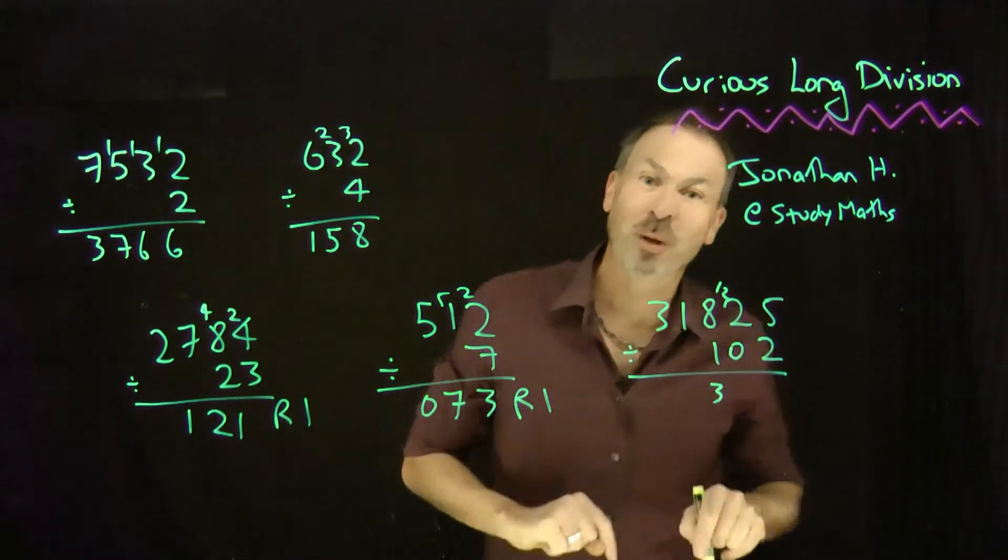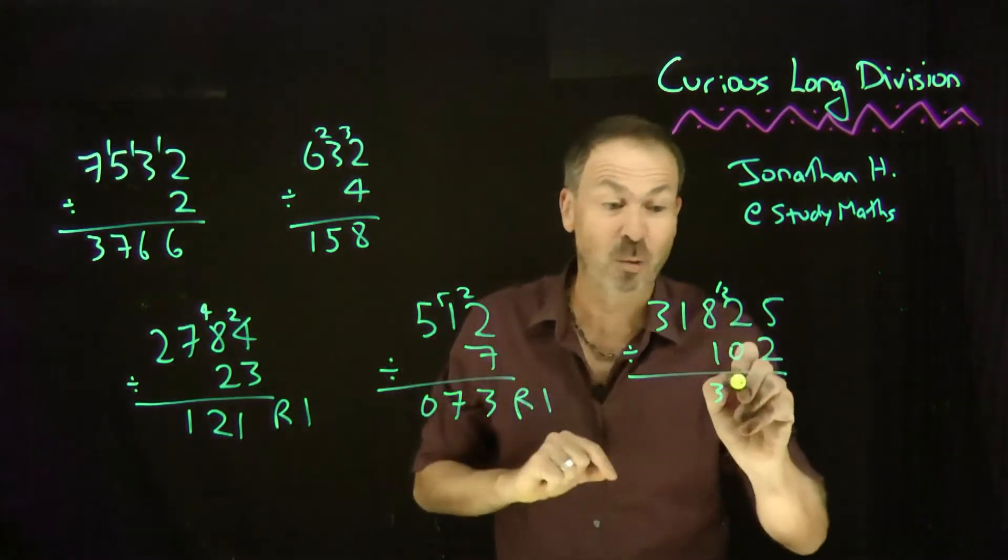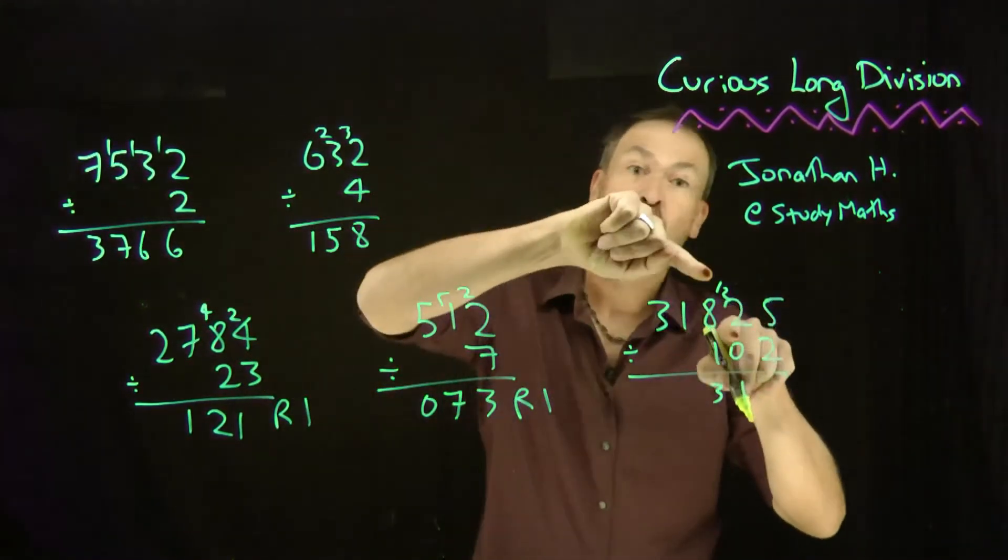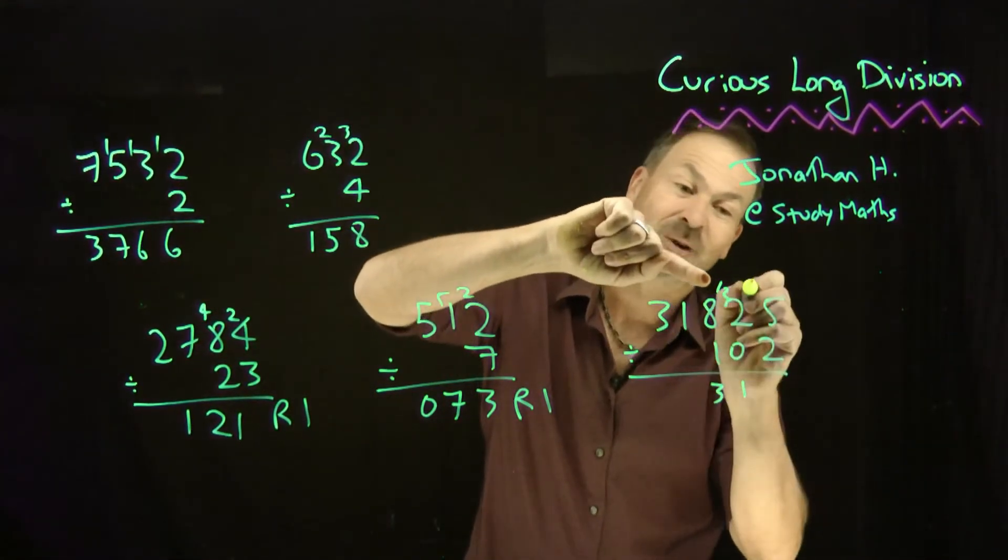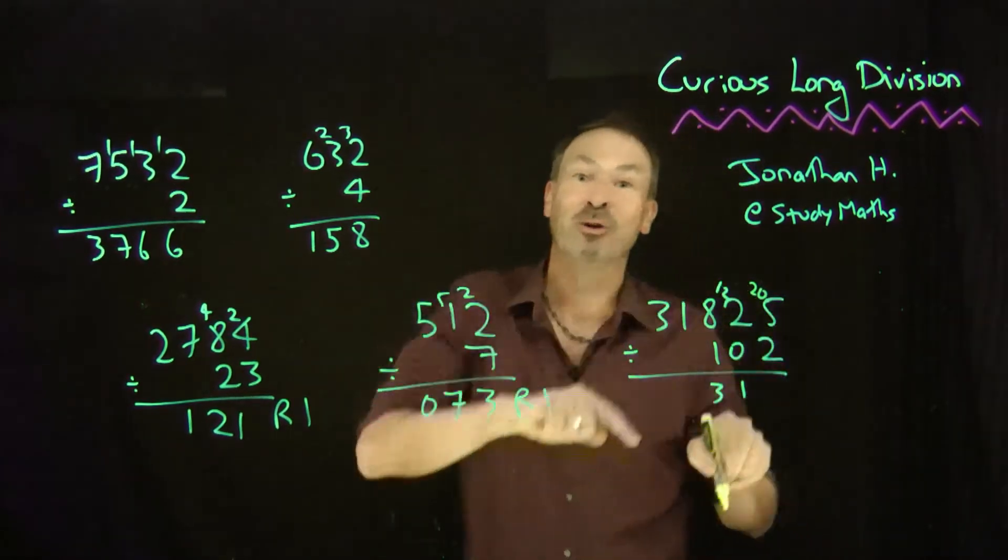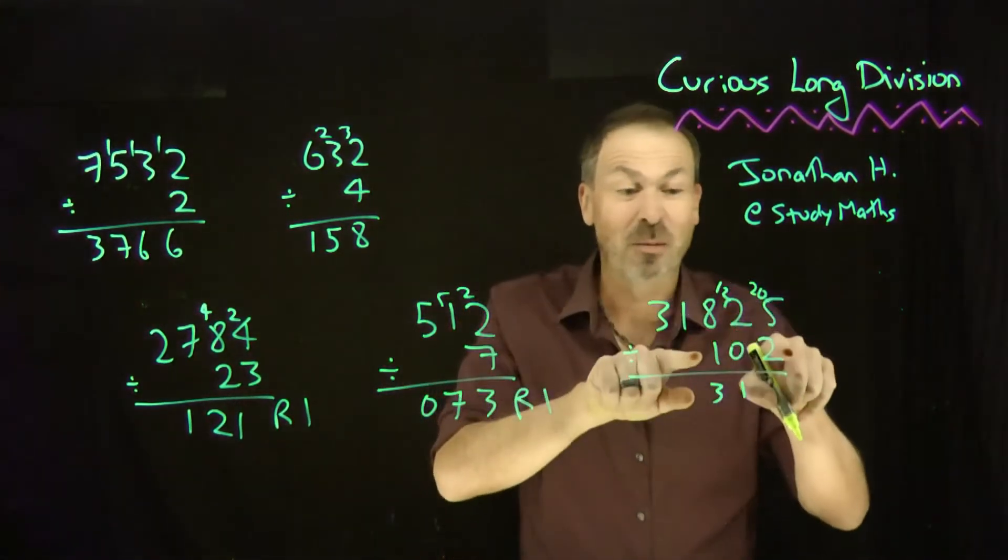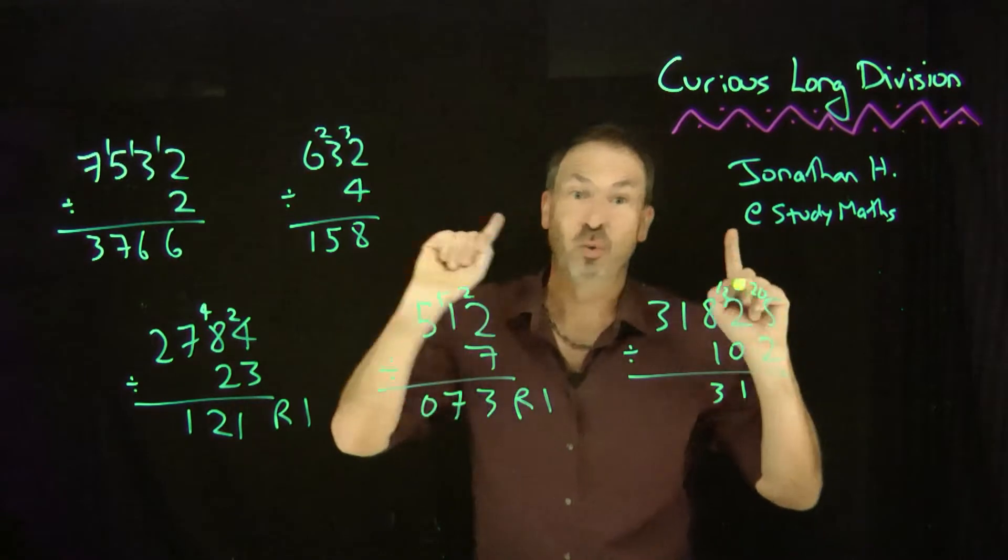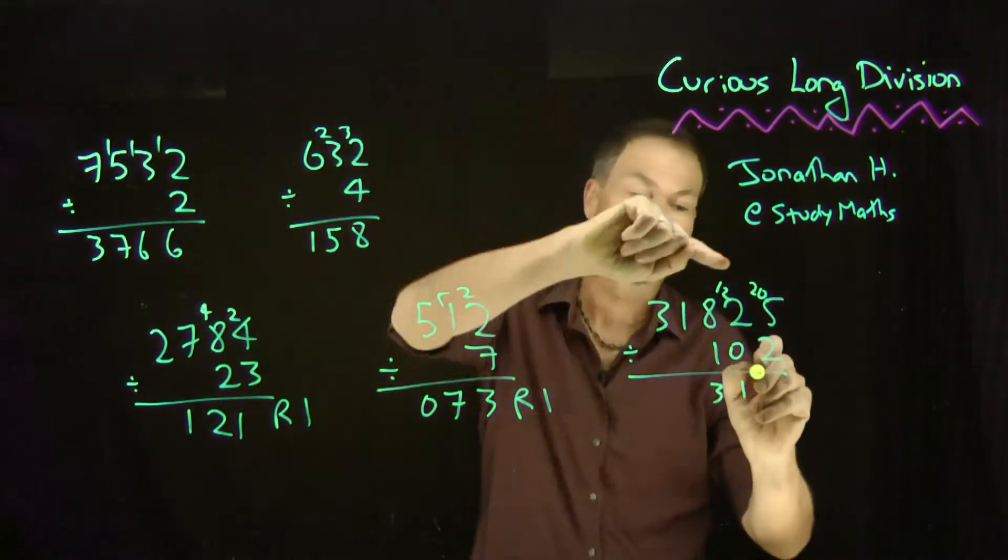How many times does 102 go into 122? It goes once. It gets me 102. But that's 20 over. I have a remainder of 20. So let's write 20 here. But now think of this as 205. How many times does 102 go into 205? I think twice. Gets me to 204. So it goes in twice.